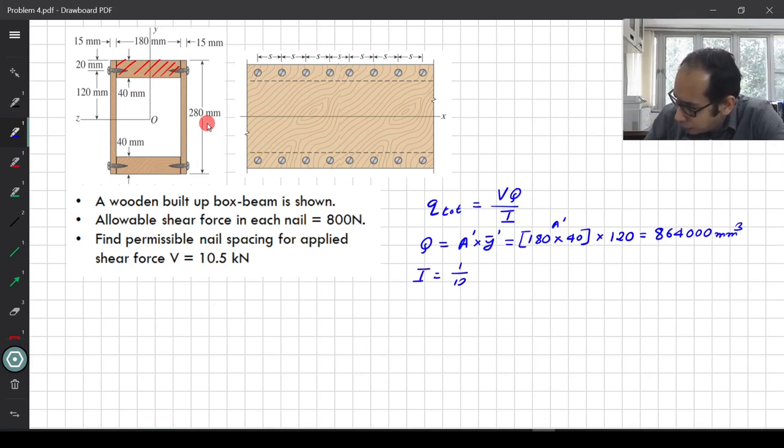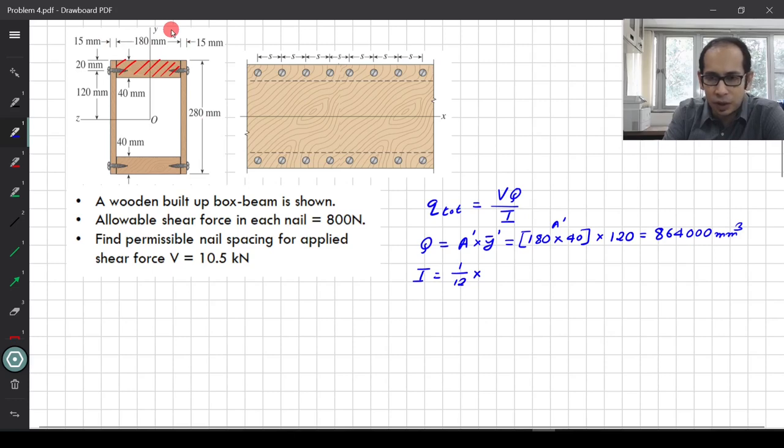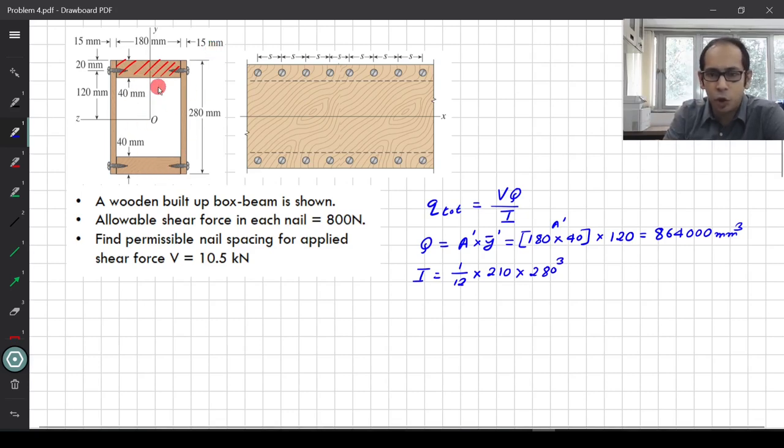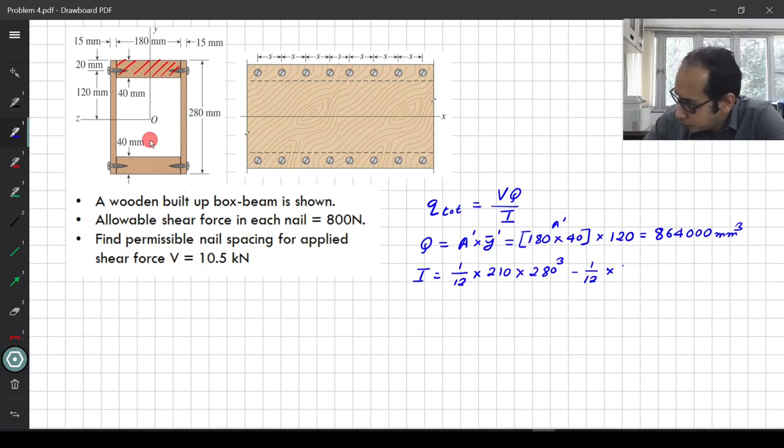I for the entire thing is 1 by 12 times B which is 180 plus 15, which is 210. 1 by 12 times 210 times D cube that is 280. That is assuming that the entire thing is solid from that we have to subtract the area moment of inertia of this hollow portion that is there. Minus 1 by 12 times the depth of this hollow portion is 200, total is 280 minus 40 minus 40 top and below. Times sorry, it will be 180 times 200 cube. 100 times 180 times 200 cube.